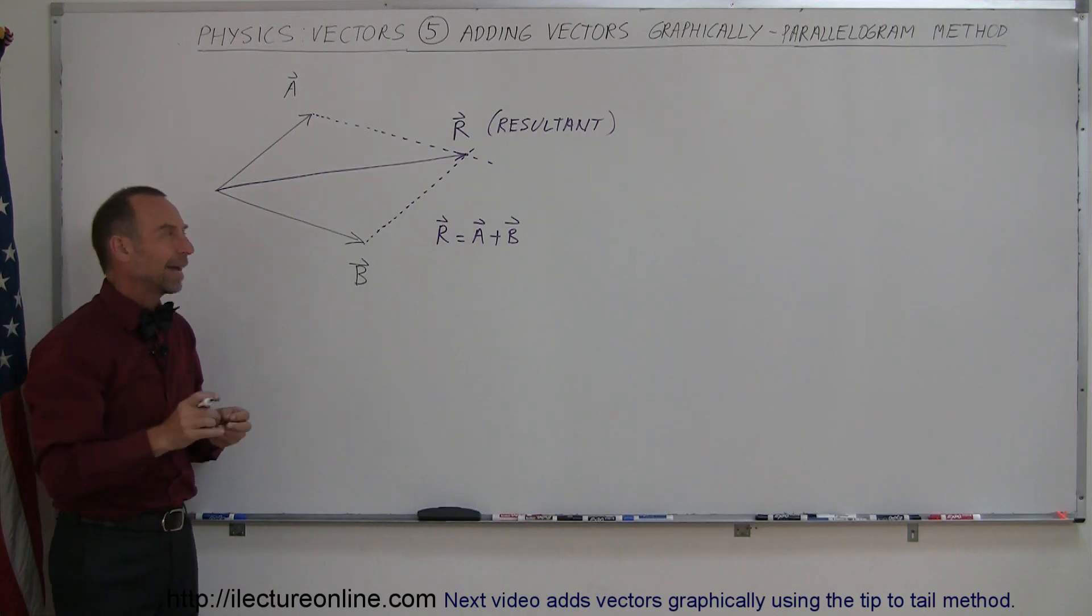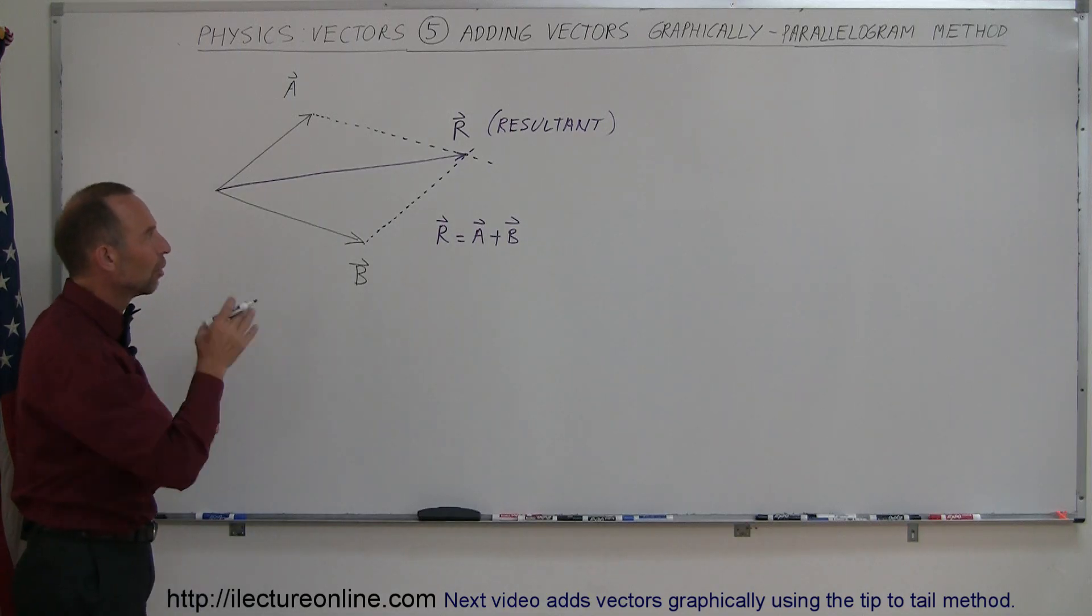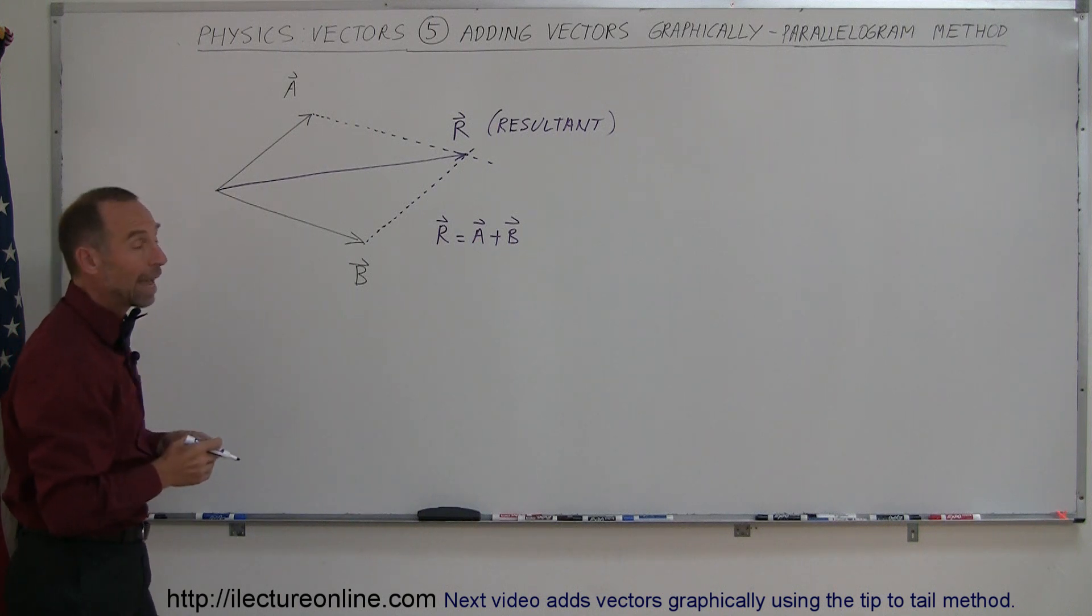Now later on we're going to teach you how to find the exact magnitude using a more mathematical method, a numerical method, to find the resultant. But at this point, this is simply the way you add two vectors together using the parallelogram method.